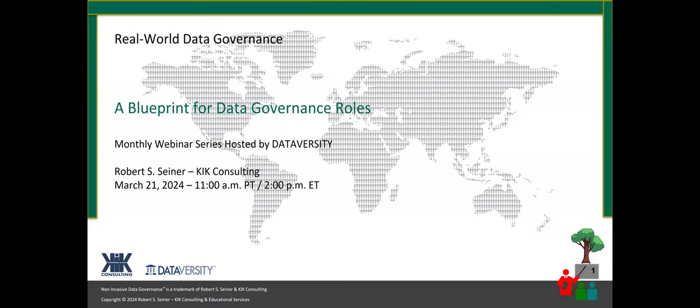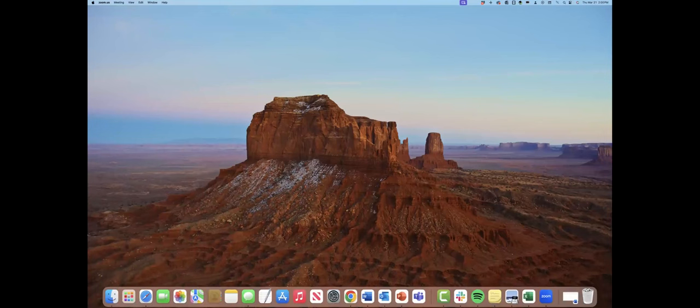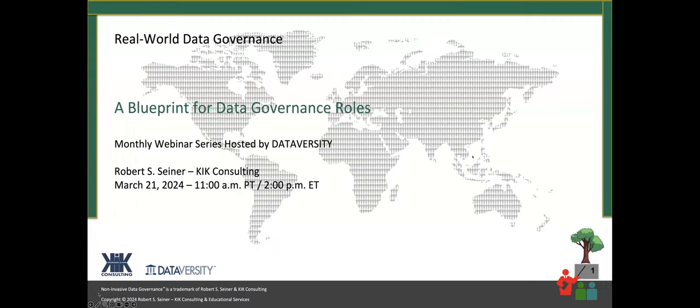Hello and welcome. My name is Shannon Kemp and I'm the Chief Digital Officer of Dataversity. We'd like to thank you for joining the current installment of the monthly Dataversity webinar series, Real World Data Governance with Bob Seiner. Today Bob will discuss a blueprint for data governance roles. Due to the large number of attendees, you will be muted. You may chat with each other — note that Zoom defaults chat to panelists only, but you can switch that to network with everyone. Questions will be collected via the Q&A section; click those icons at the bottom of your screen.